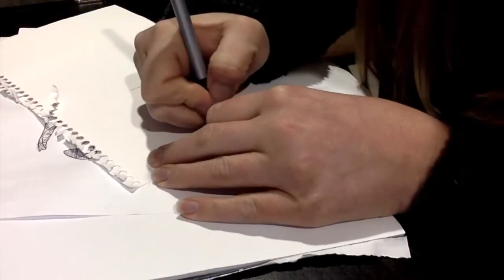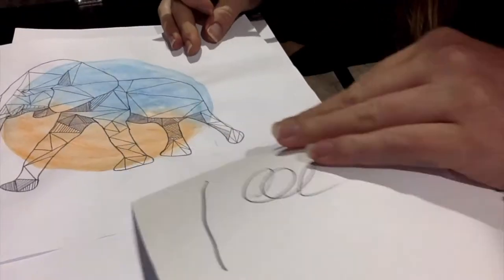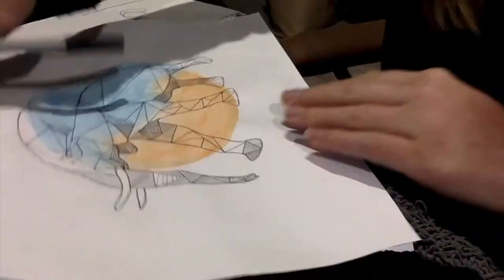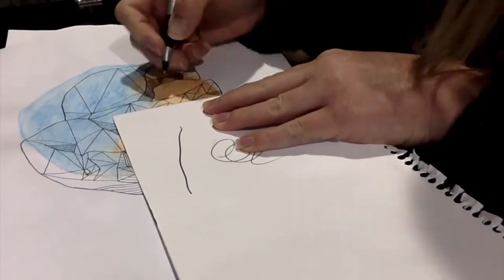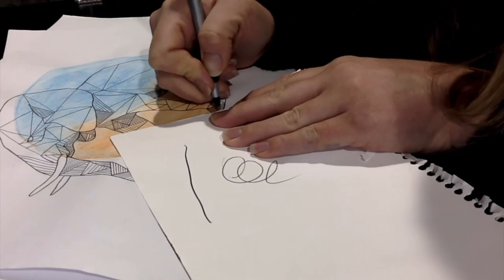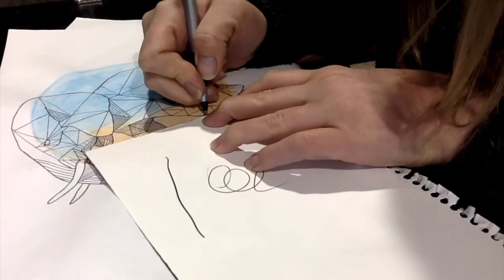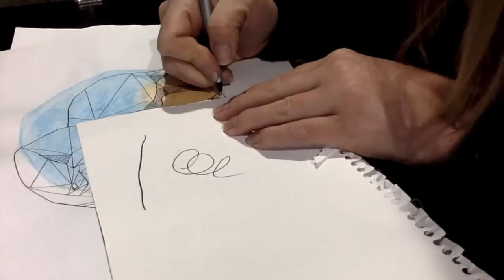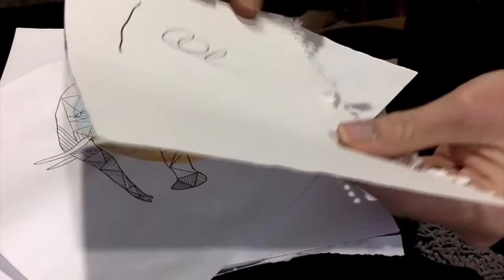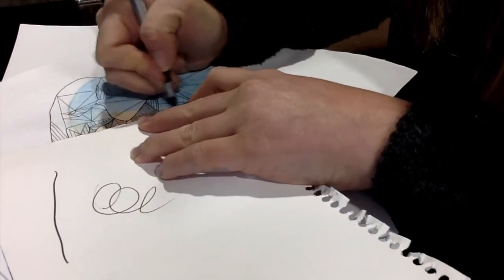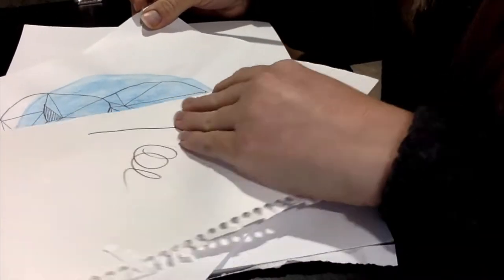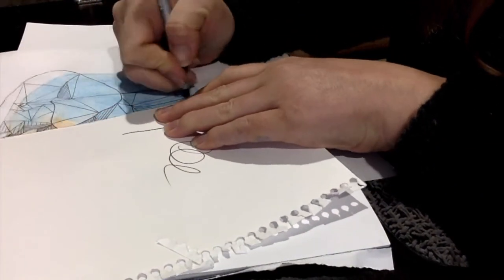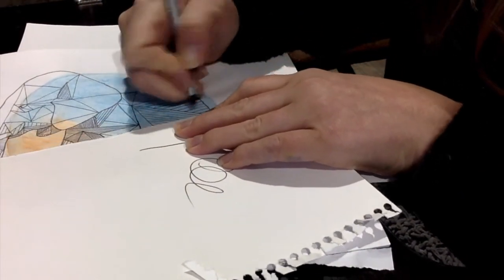For example, one triangle may have lines going vertically and the triangle next to it may have lines going diagonally. Check out the rest of my time lapse to see my work on adding these lines to my artwork.